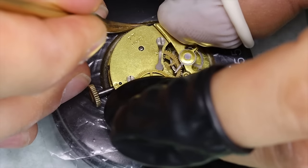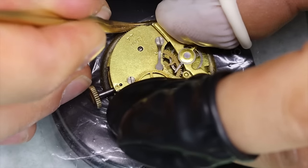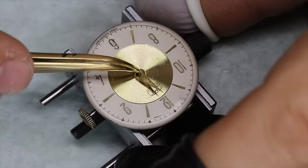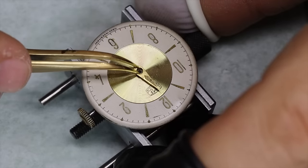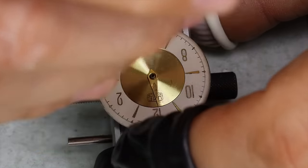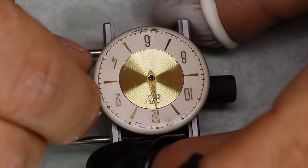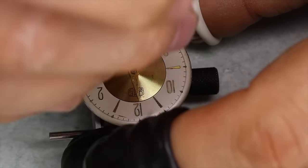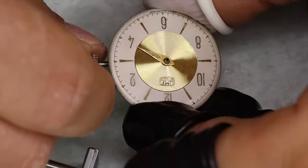One other thing to observe, perhaps, is that these pin pallet movements are never complicated. They are, of course, the base functionality of showing the time. Sometimes you had with a date, but that's pretty much it. It would defy the whole purpose of the movement if you started putting in a chronograph on these ones, or a moon phase or a tourbillon.